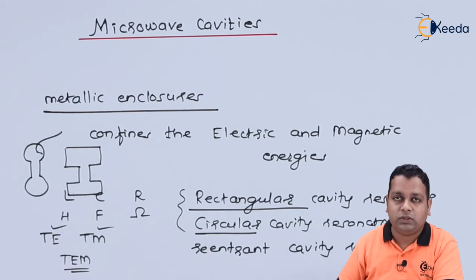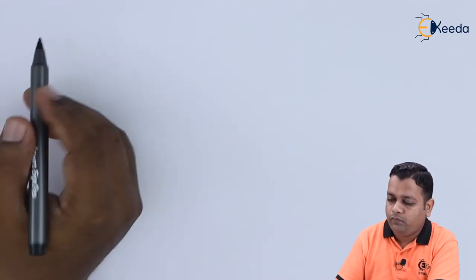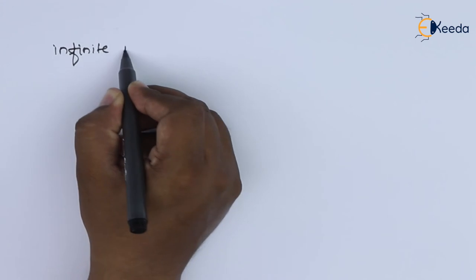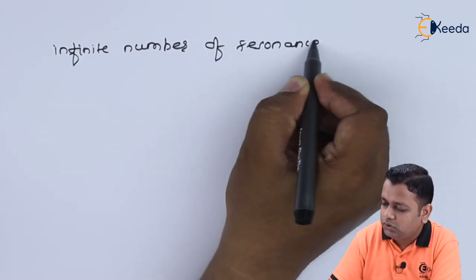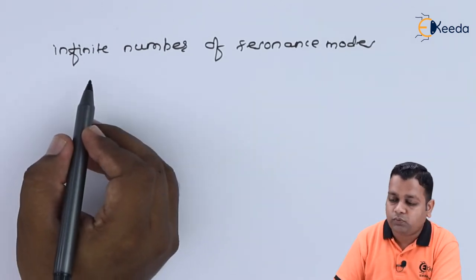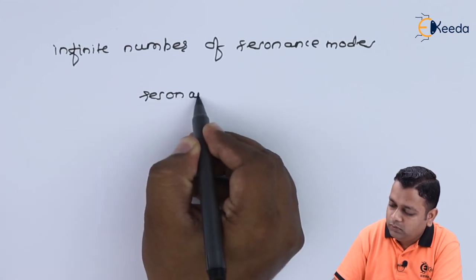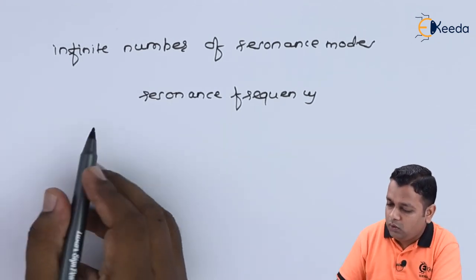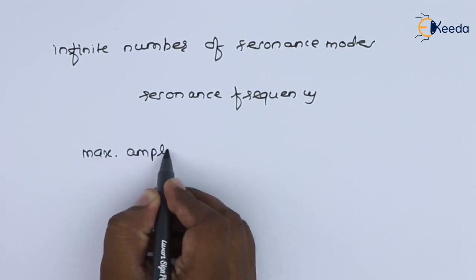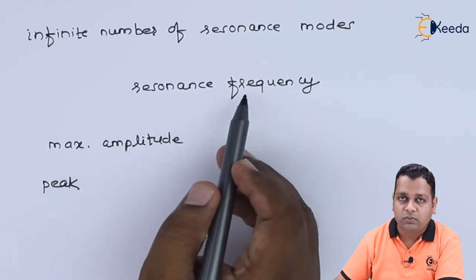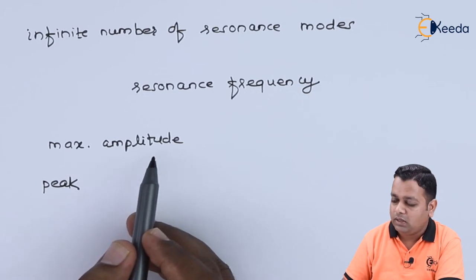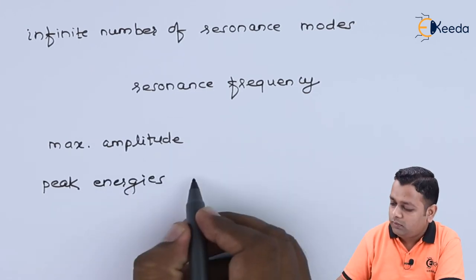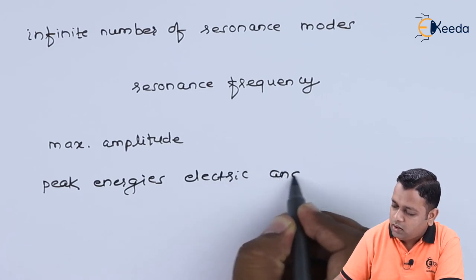So let us talk about the resonance condition. Theoretically, for a given resonator, there are an infinite number of resonance modes. Each mode corresponds to a particular resonance frequency. At the resonance frequency, we obtain maximum amplitude. When the frequency is at the resonance frequency, we have the peak values of the energies corresponding to the electric and magnetic field vectors.